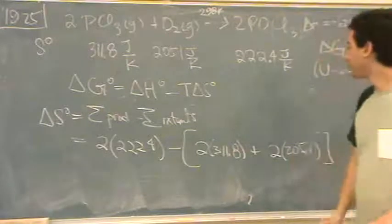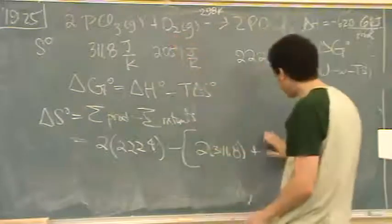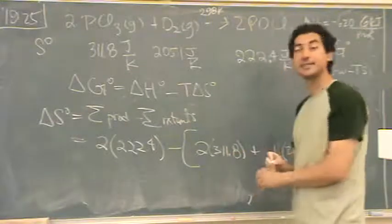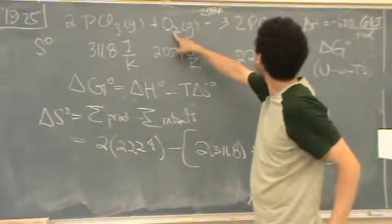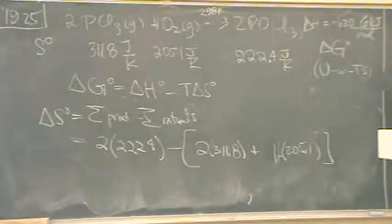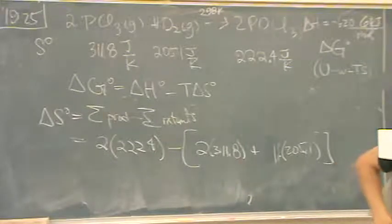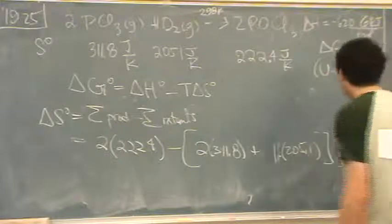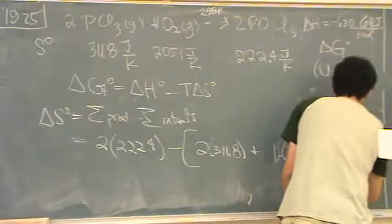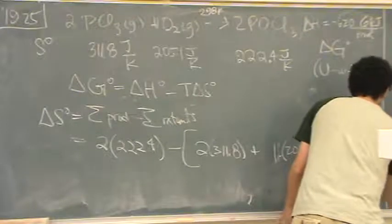Yeah. Why don't you multiply the 205.1 by 2? Oh, yeah. This is a 1, right? Yeah. That's my mistake. It should be a 1 here. Thanks. Because this should be... I balanced it right. This should be a 1. Good. Thanks. Okay. This turns out to be minus 383.7 joules per Kelvin.